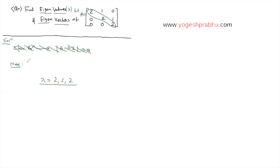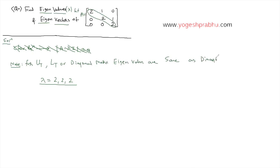Let me write down a note more precisely. For an upper triangular matrix, a lower triangular matrix — where all the values above the diagonal element are 0 — or a diagonal matrix, the eigenvalues are going to be the same as the diagonal values. This is a property of eigenvalues that you have to remember. So we don't really have to solve; we directly write down the diagonal values as eigenvalues.